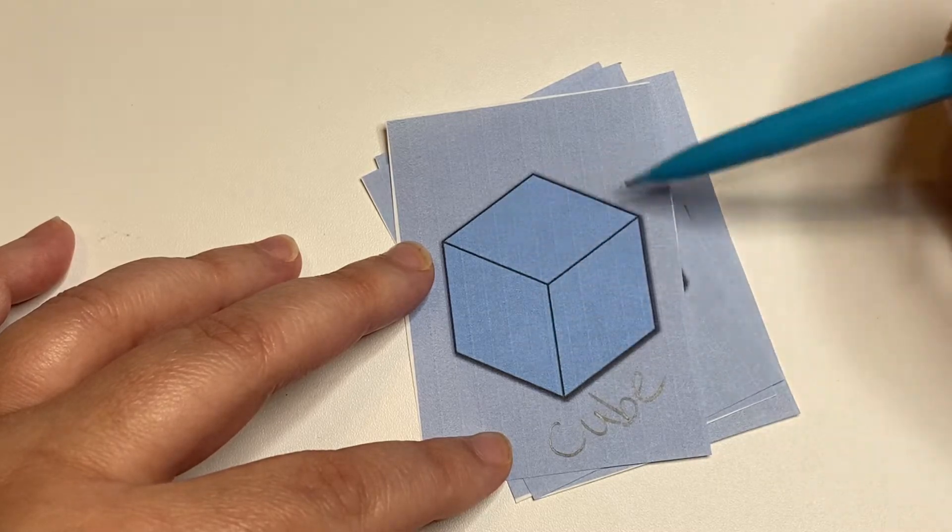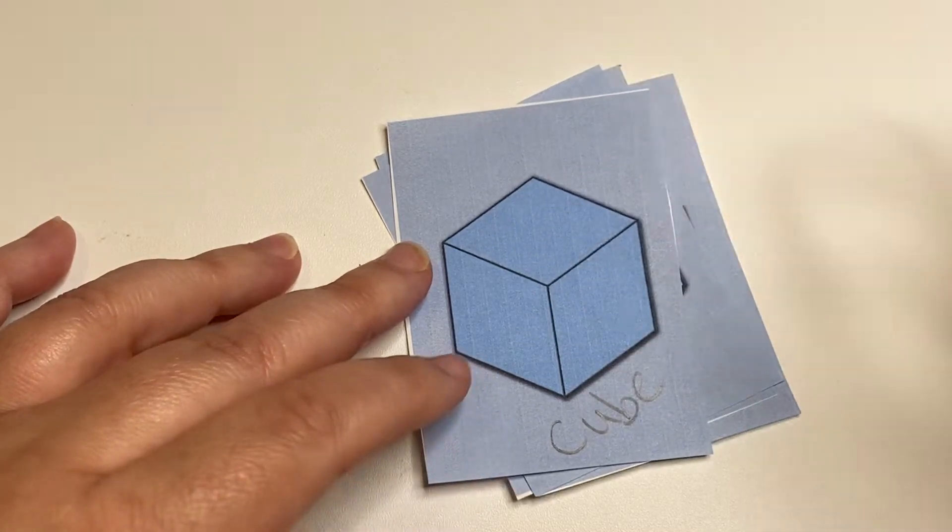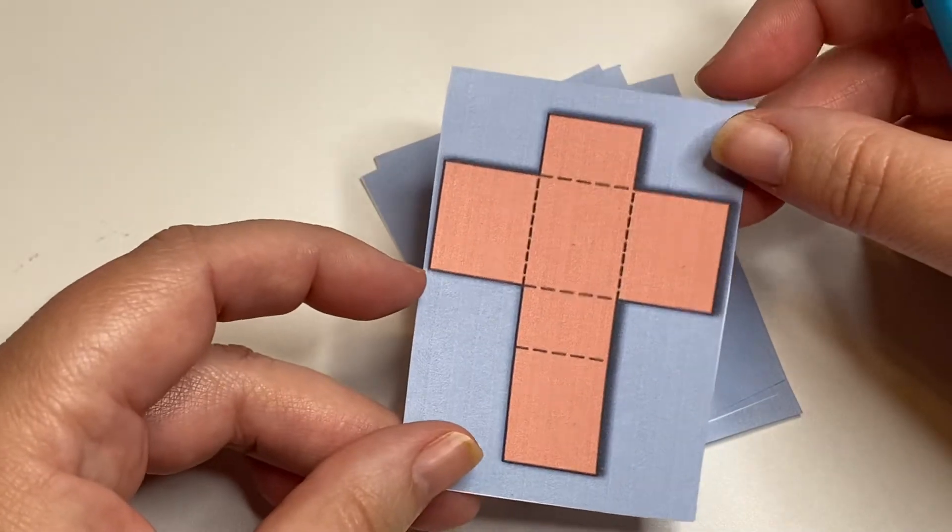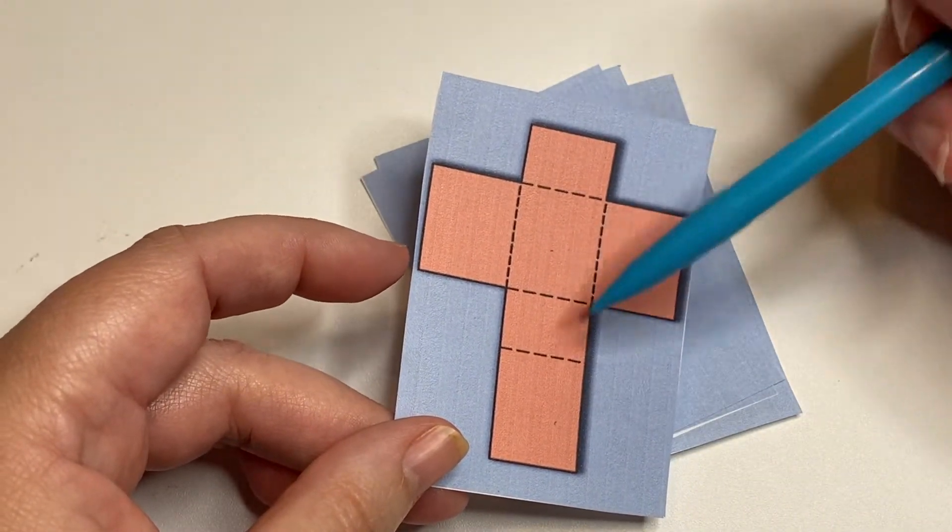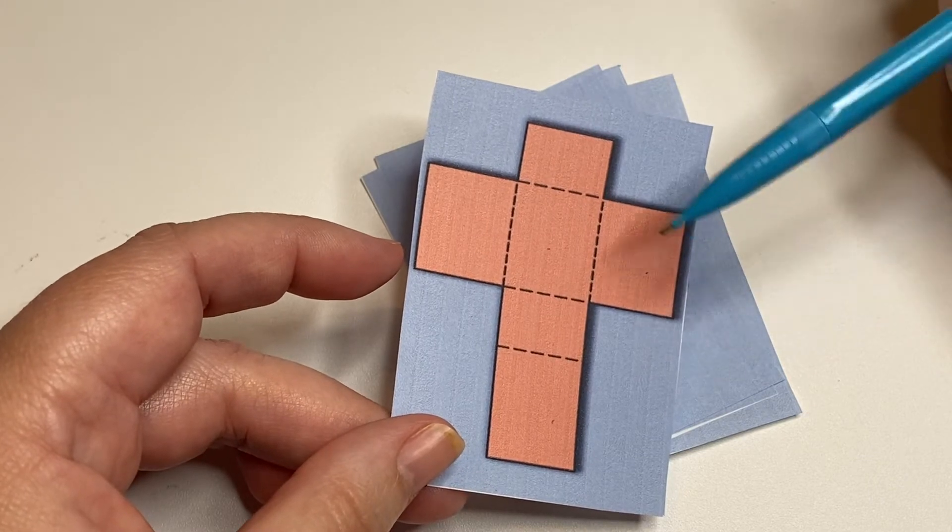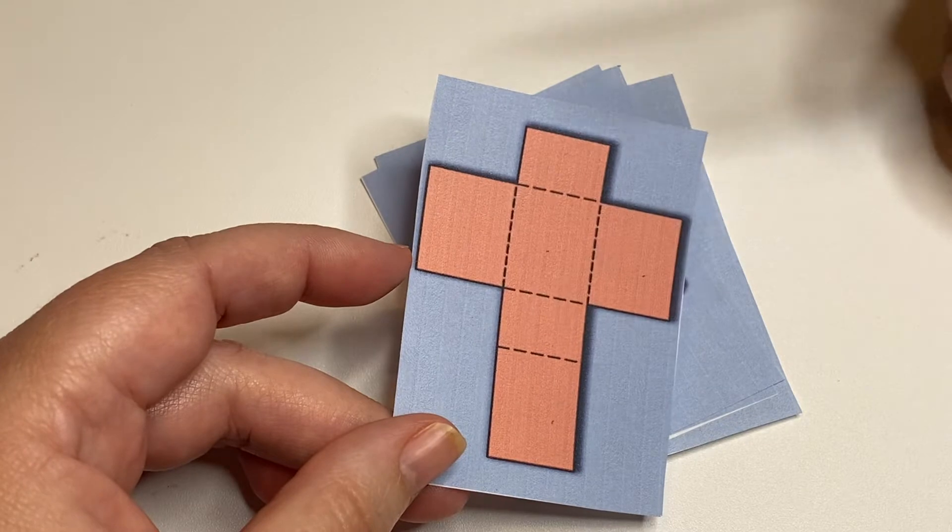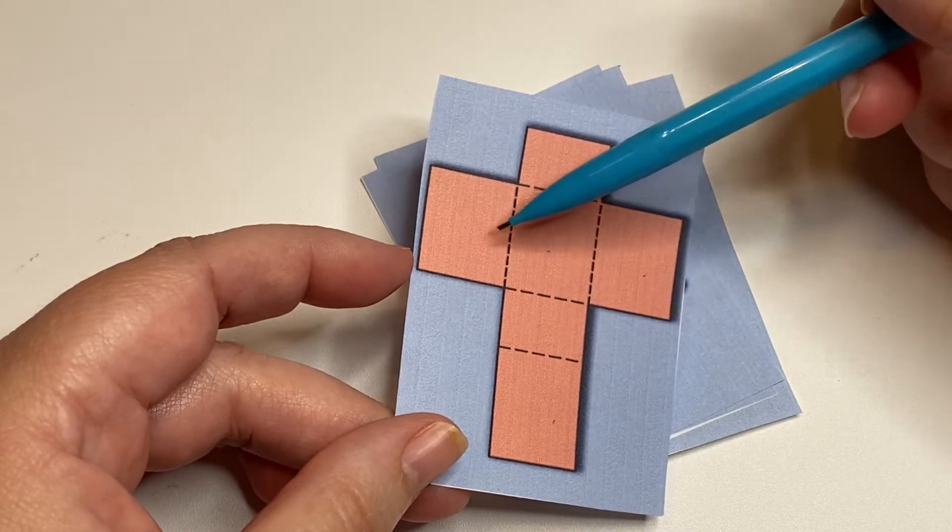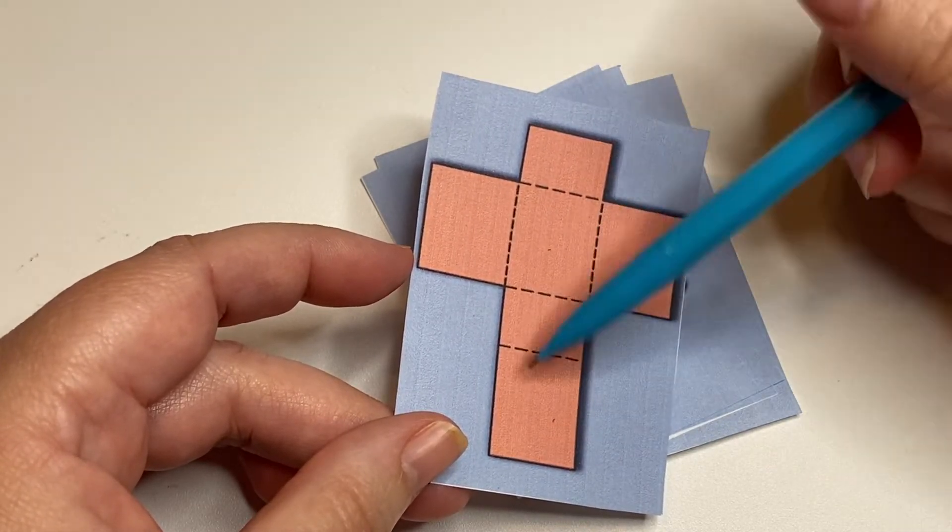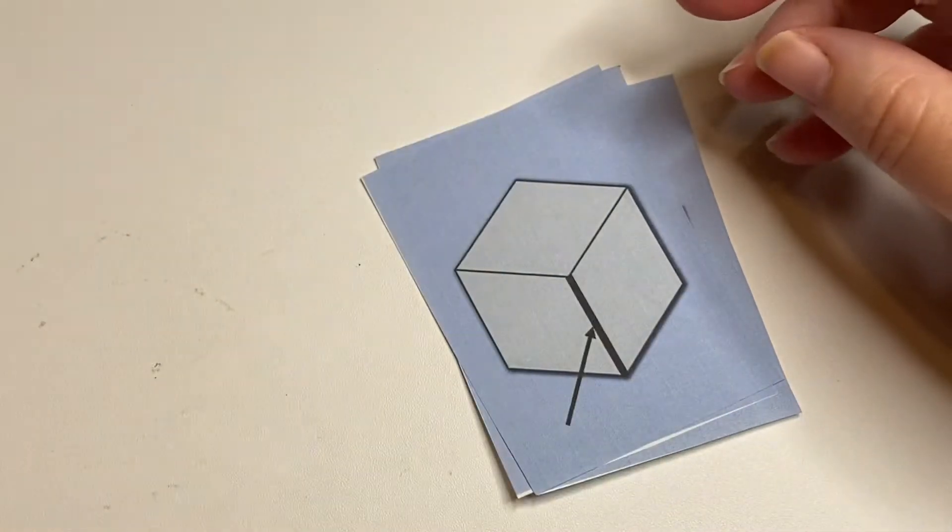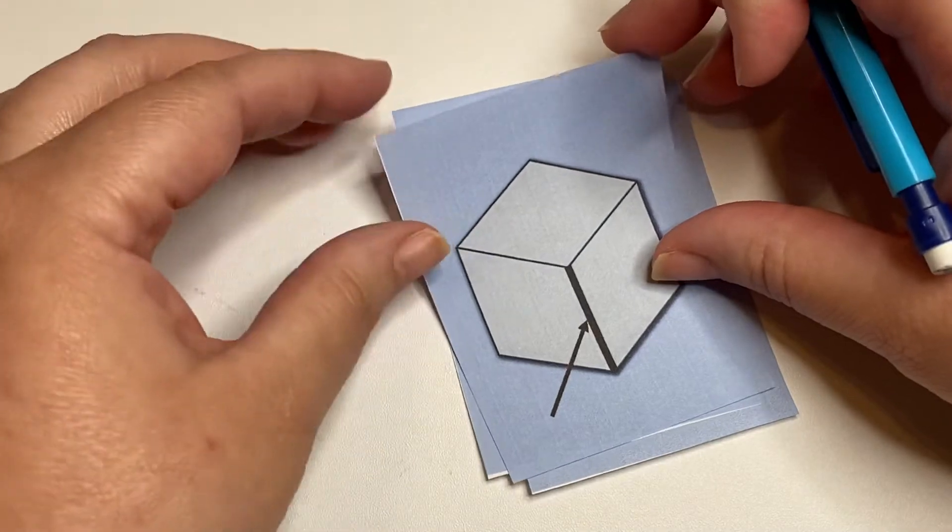Don't forget that a net is what happens when we unfold it. So when we unfold a prism we will get the six sides, and for this example there would be six sides and we would see the six sides. Now this net does not match that cube, but just to get the idea that's what a net is. And let's talk about the parts of a cube.